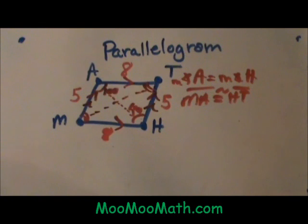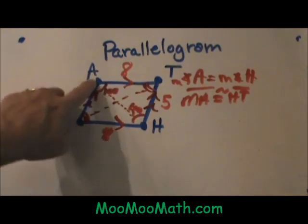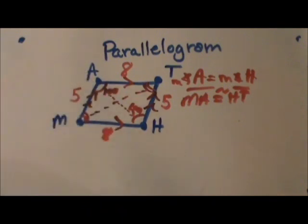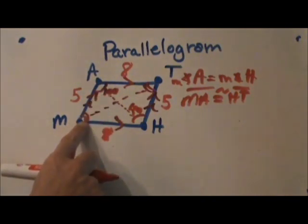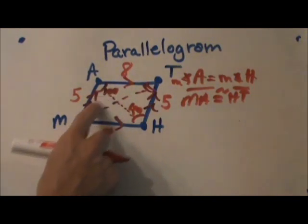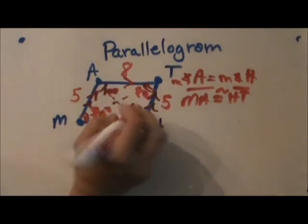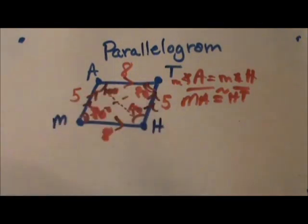Then you also have one more property and that is that these adjacent angles, adjacent meaning next to, so these are the opposite and these are the adjacent. These adjacent angles are supplementary. So if we know that this angle is 100, this angle M must be 80 because supplementary means they add to 180. So that means this angle is 80 and this angle is 80 because these two are also supplementary and we know these two opposite angles are congruent too.